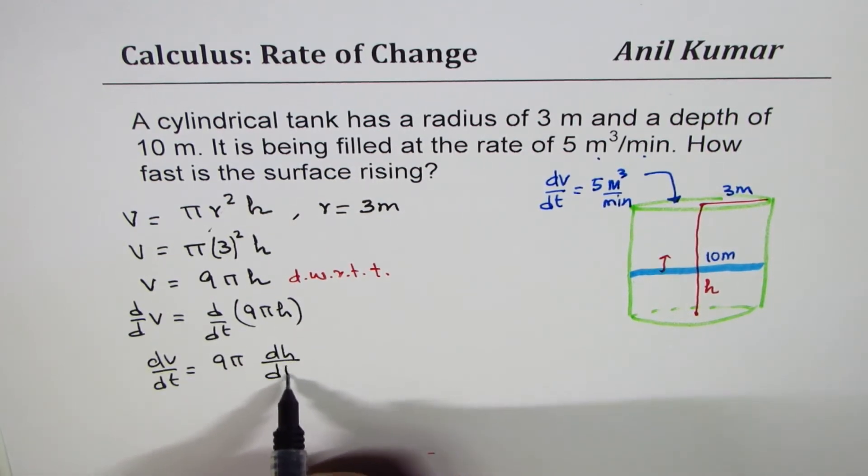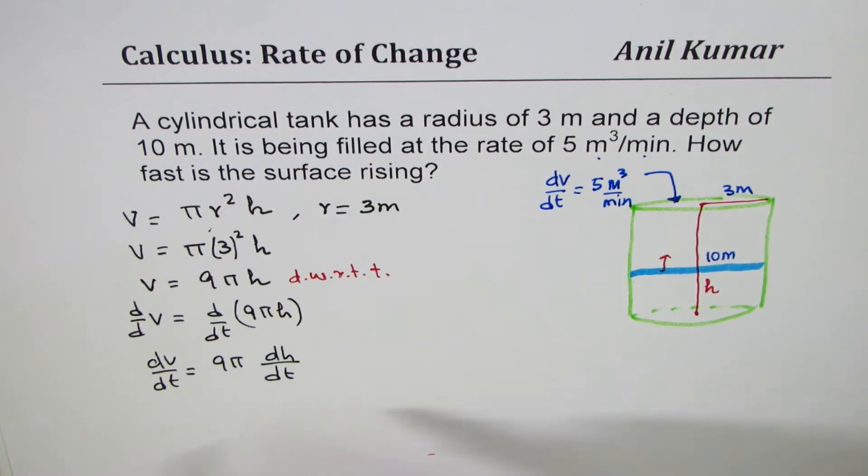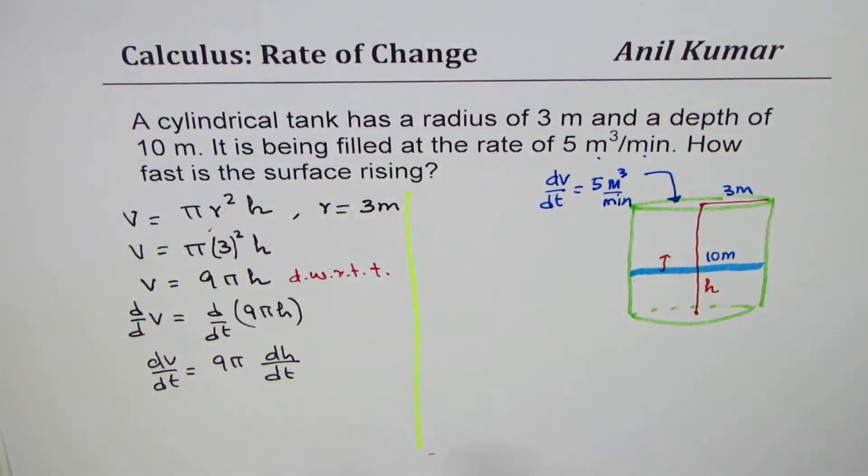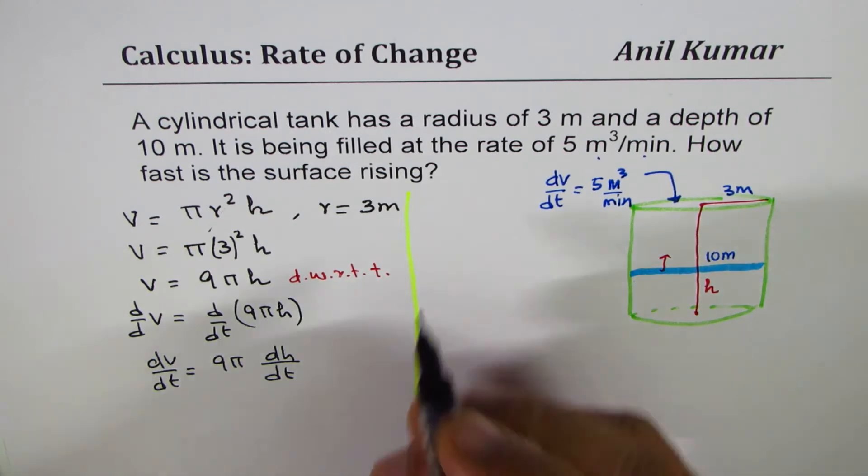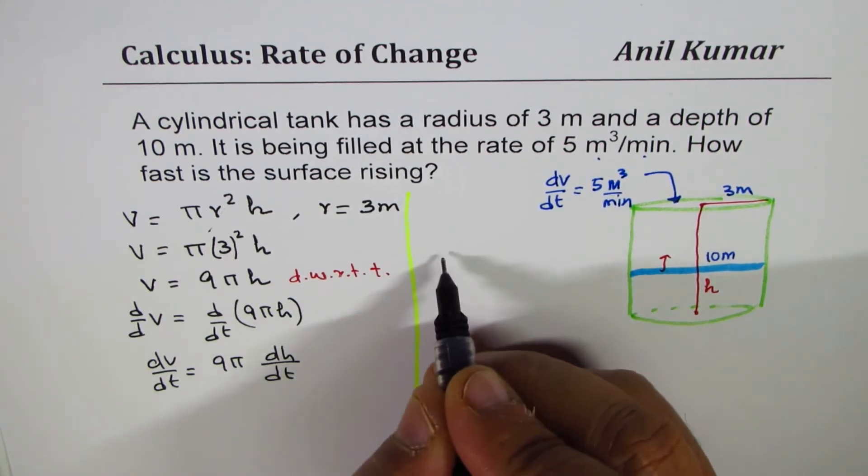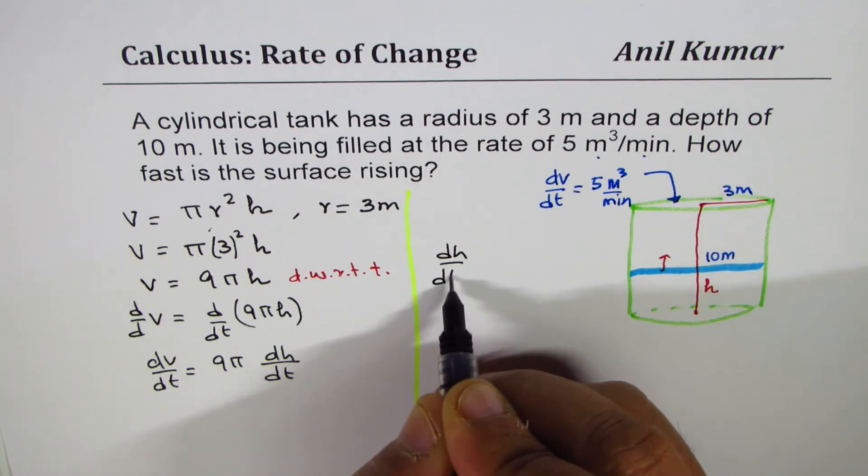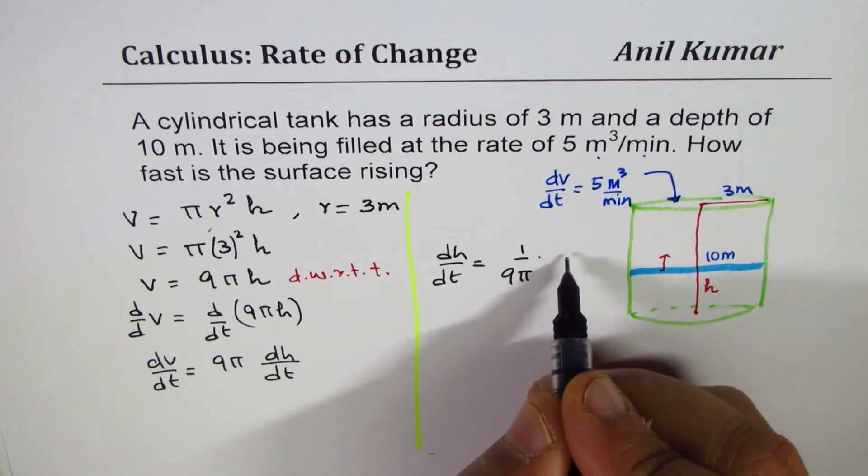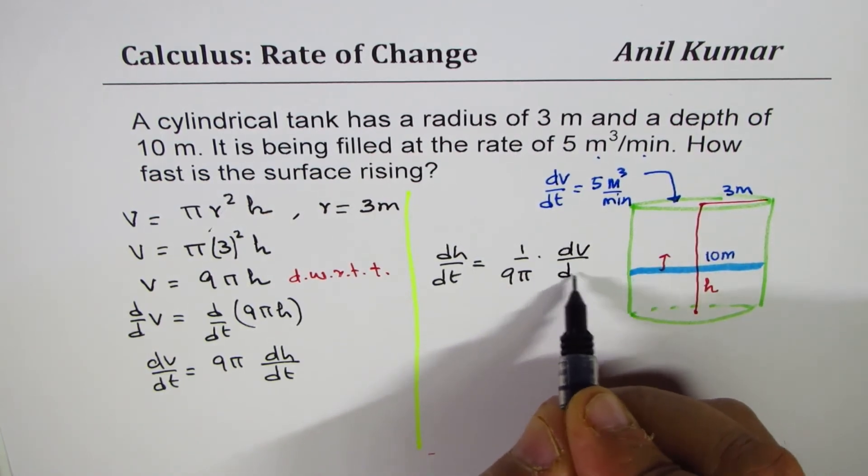So that is the expression. Since we need to find the rate of change of height, we can rearrange this equation and write dh/dt equals 1 over 9π times dV/dt.